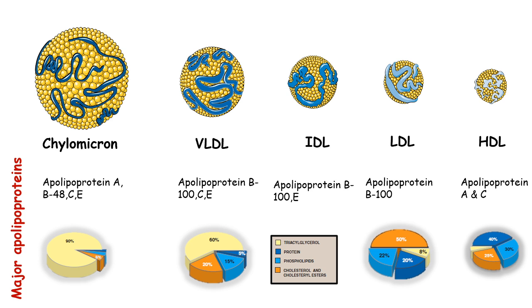Looking at the overall composition of these particles: 90% of chylomicron is triglyceride. Triglyceride composition is very high in both chylomicron and VLDL. For LDL, the concentration of cholesterol is very high — almost 50% — so LDL has the highest density of cholesterol. VLDL and chylomicron have the highest proportion of triglycerides. In contrast, HDL has a higher proportion of apolipoprotein, almost 40% of it.